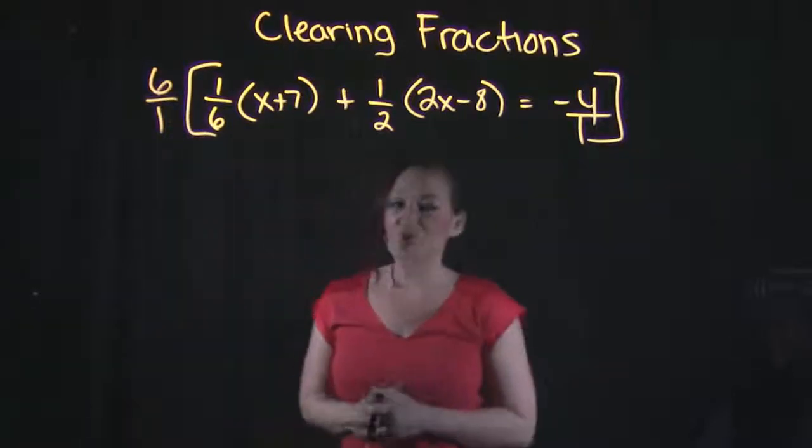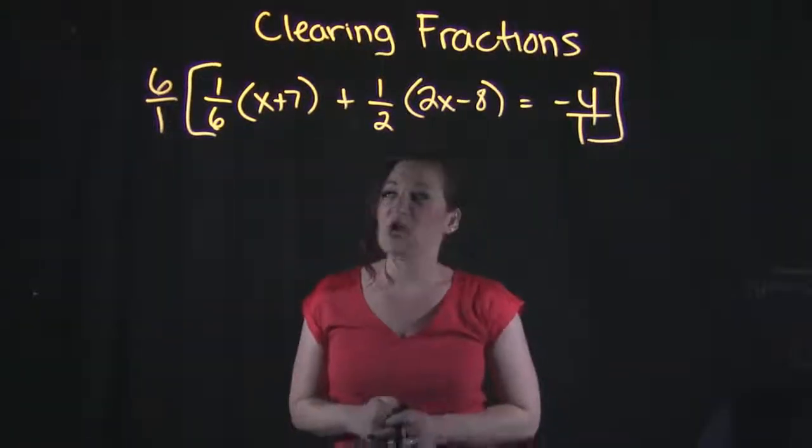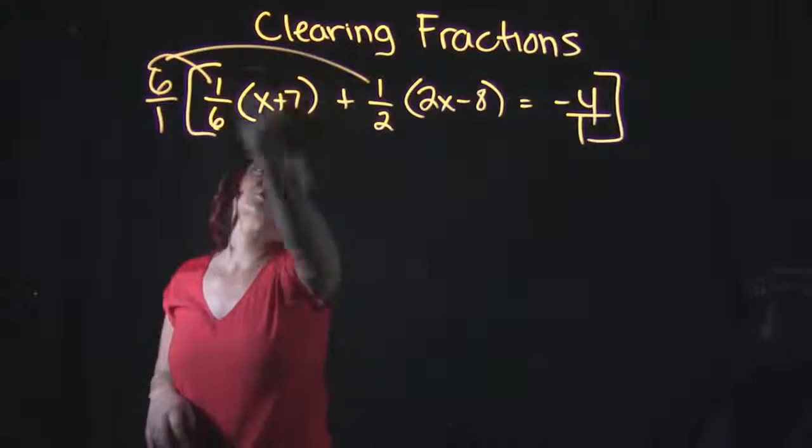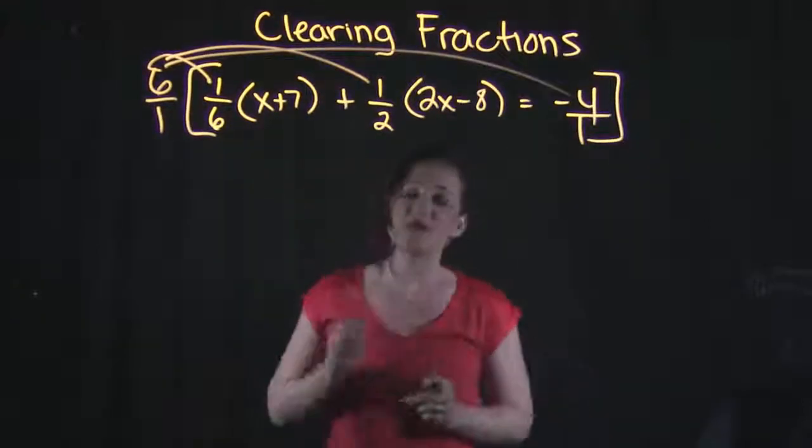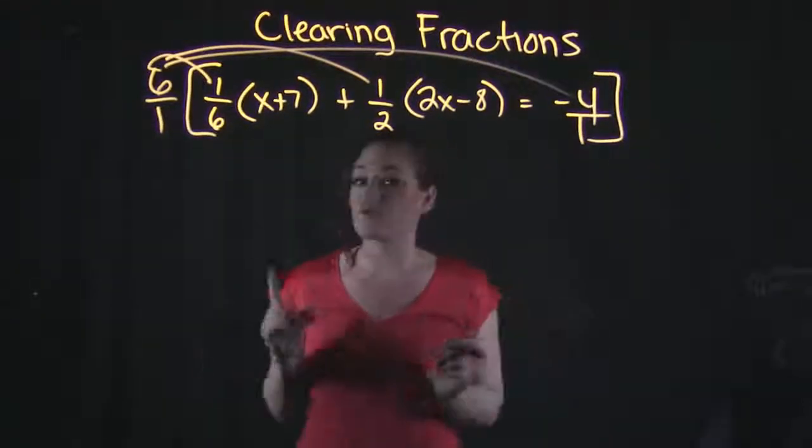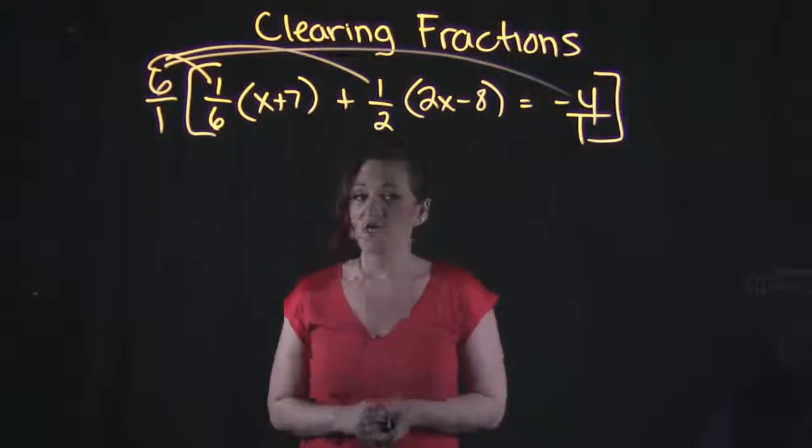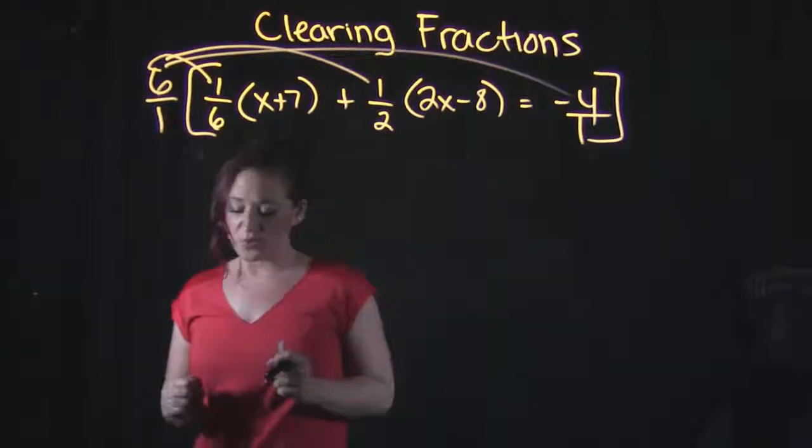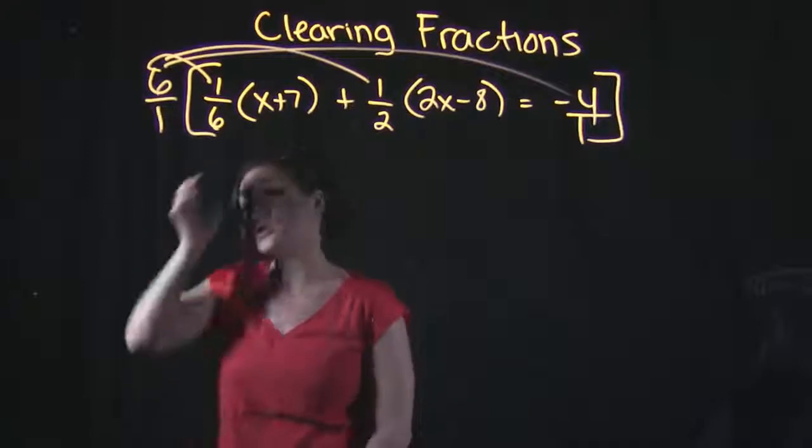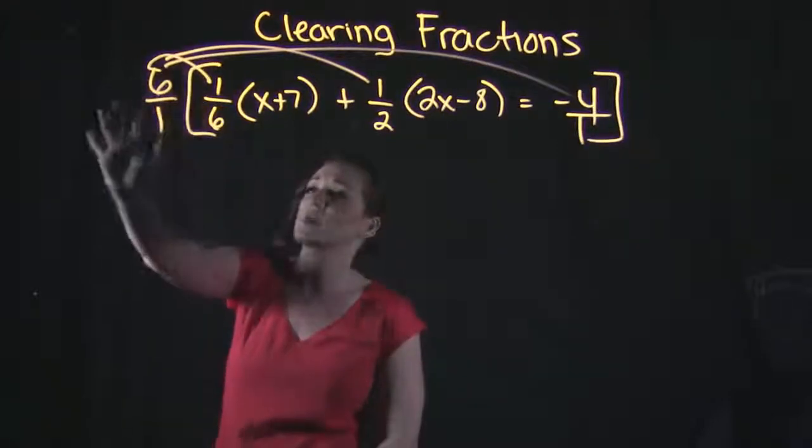So what that tells me is I am going to multiply the entire equation by six. That six is going to get multiplied to all three terms, specifically the fractions in front of the terms, the coefficients of the terms, essentially. When we multiply this together, keep in mind that fraction multiplication is numerator times numerator, denominator times denominator.